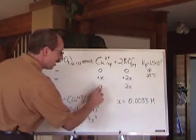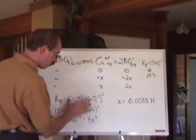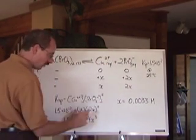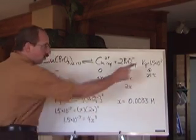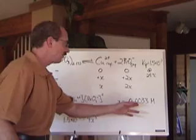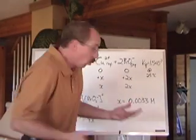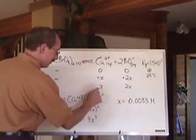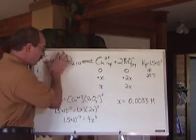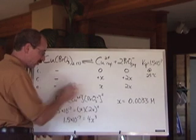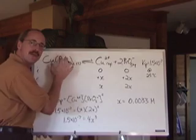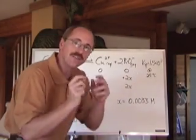We take those and put them into the expression — it's the concentration of Cu2+ times the concentration of bromate squared. Put those numbers in: knowing the Ksp, we'll get x equals 0.0033 moles per liter. That x is the concentration of the copper ion, and it's also — we kind of fudge it and say — that's actually the concentration of this chemical at the point of saturation.